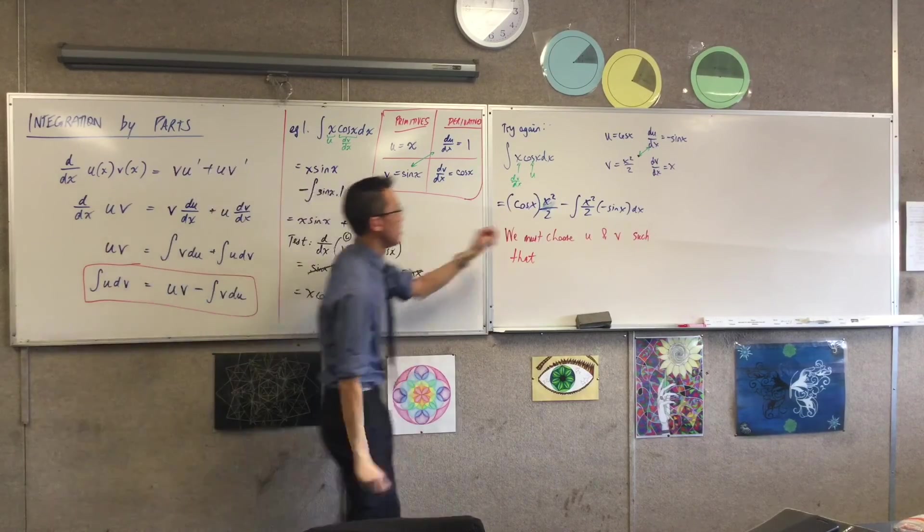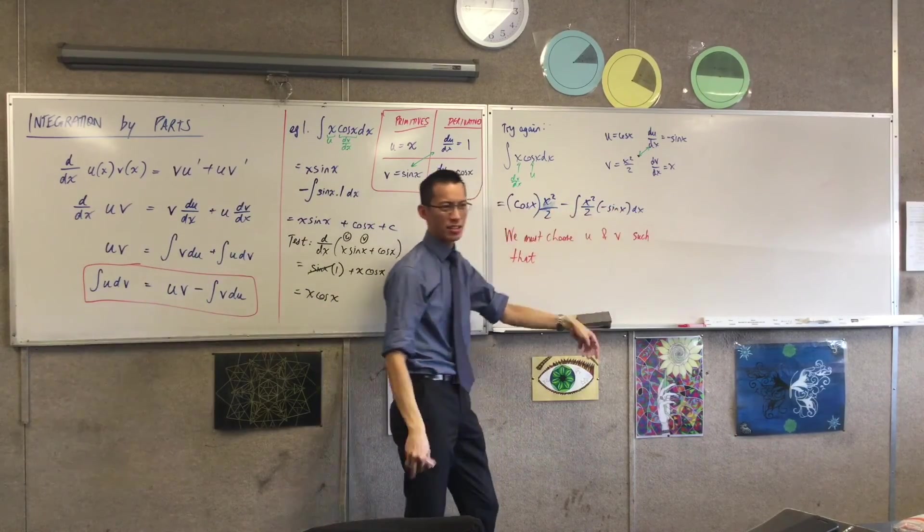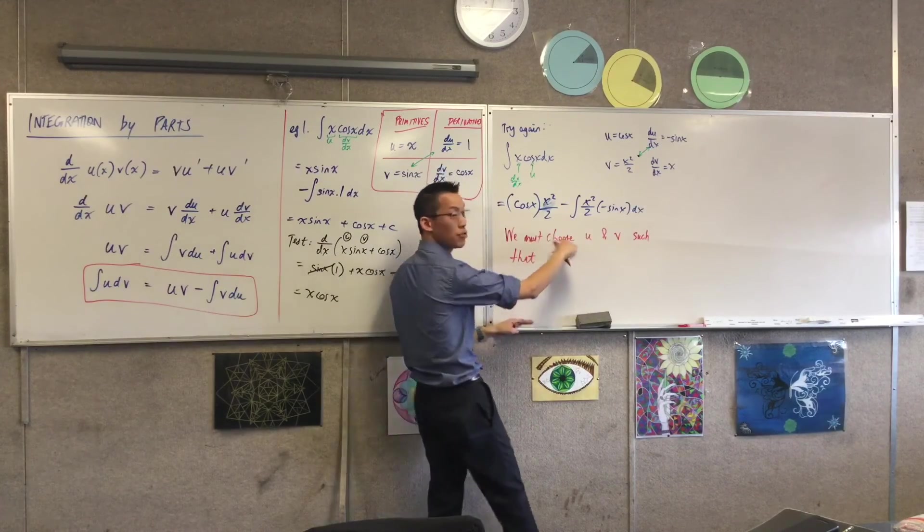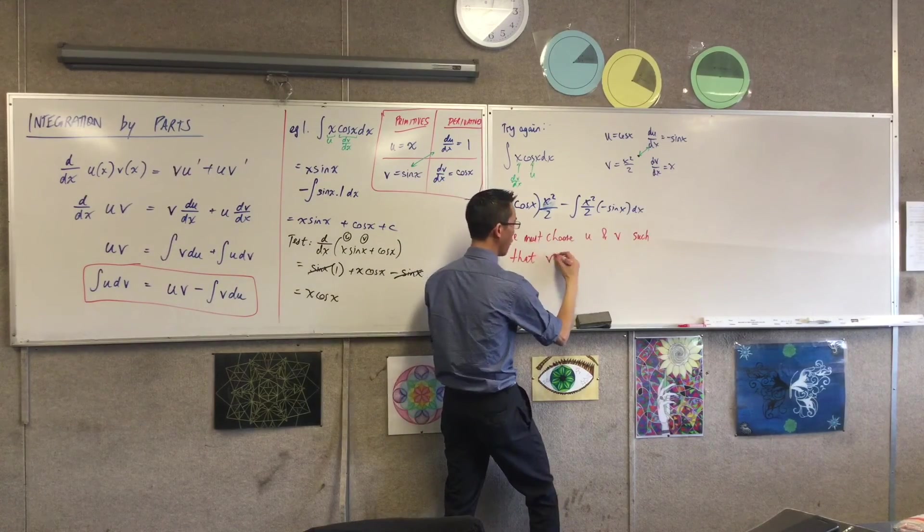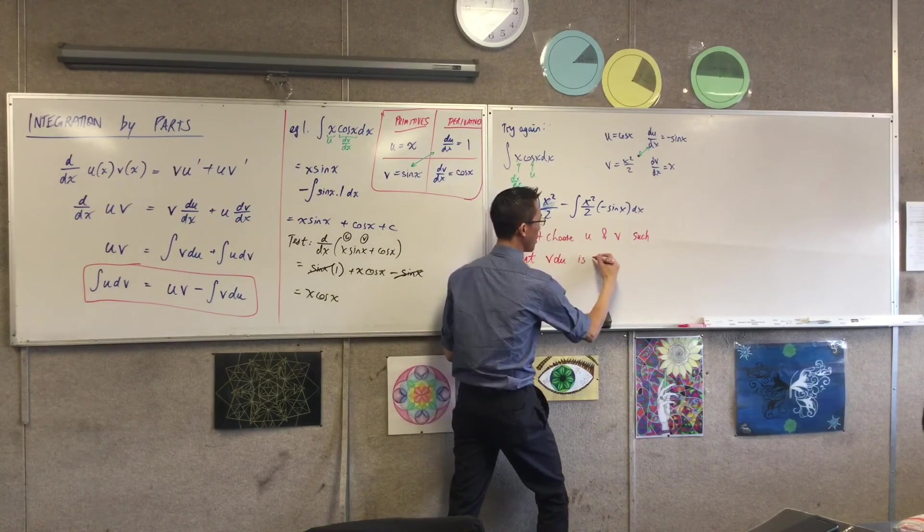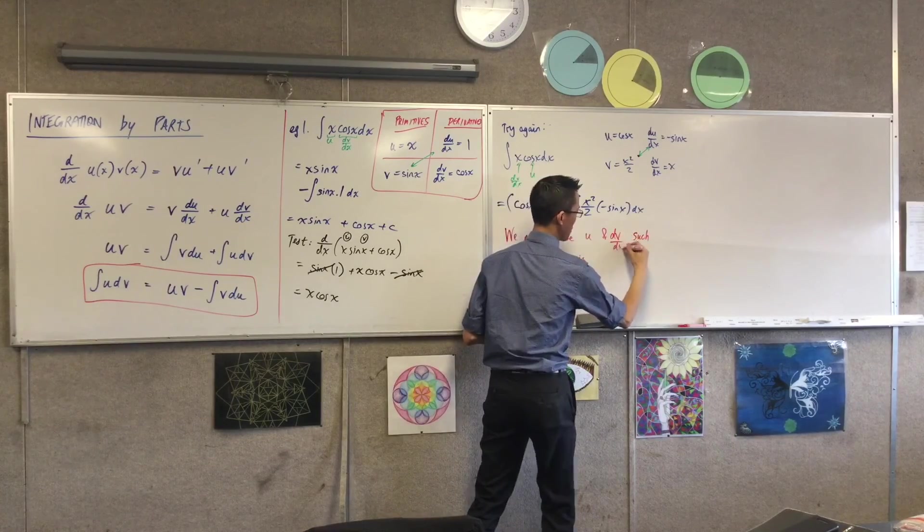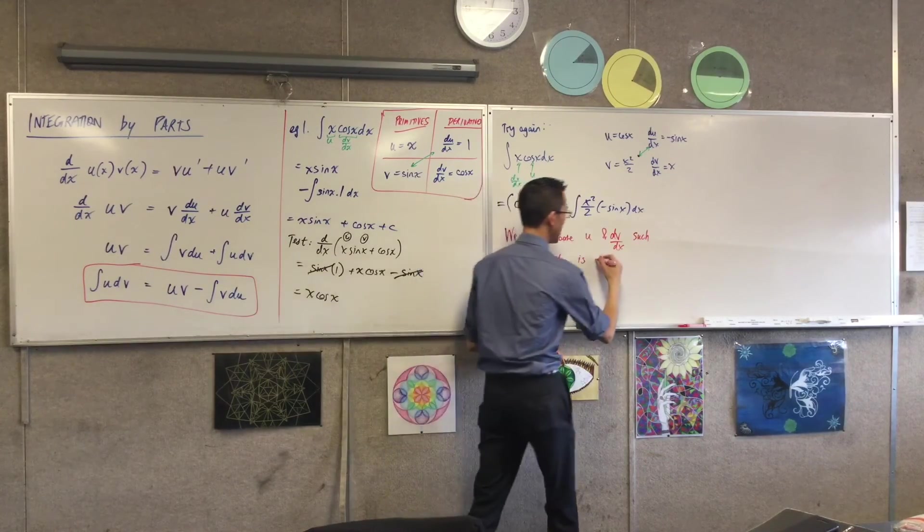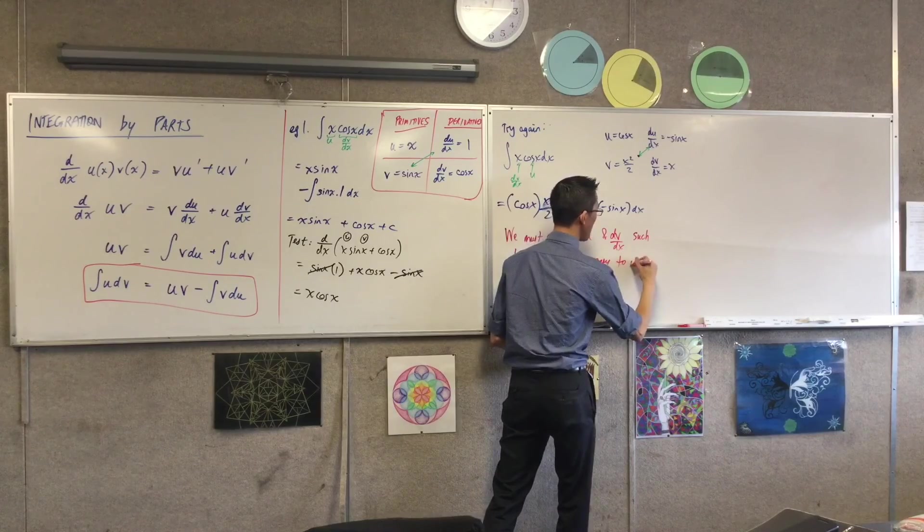This time, we've got x squared on two sin x. Yuck. So, you want to choose u and dv/dx such that v du is easy to integrate. That's what you're after.